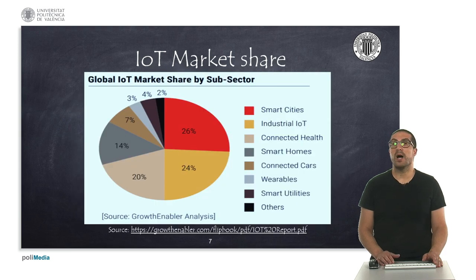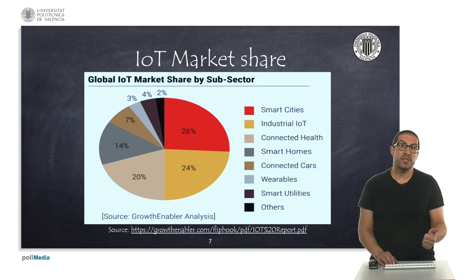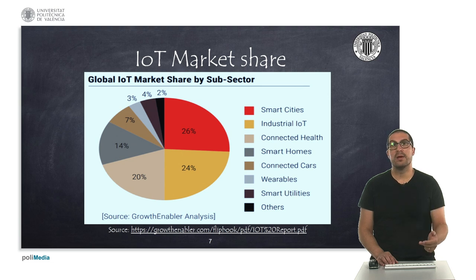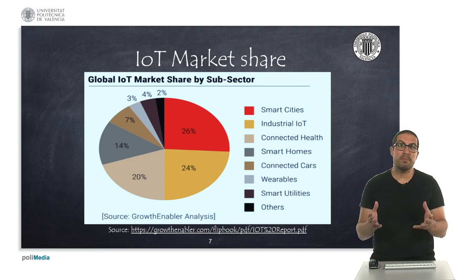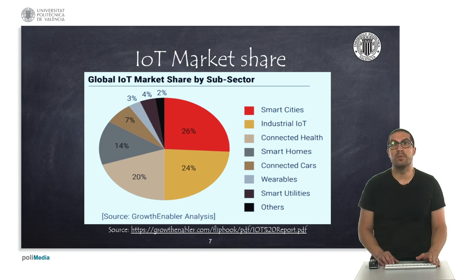If we look into the market share of different types of IoT applications, we clearly see that smart cities, industrial applications, health, and smartphones take the biggest part of this share. But also intelligent cars, wearables, and smart appliances are expected to grow.